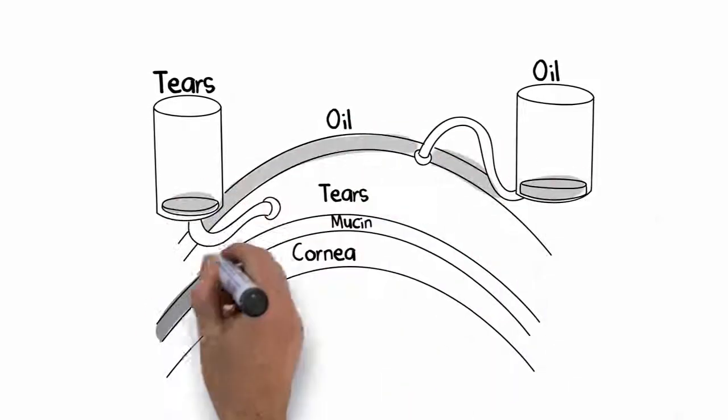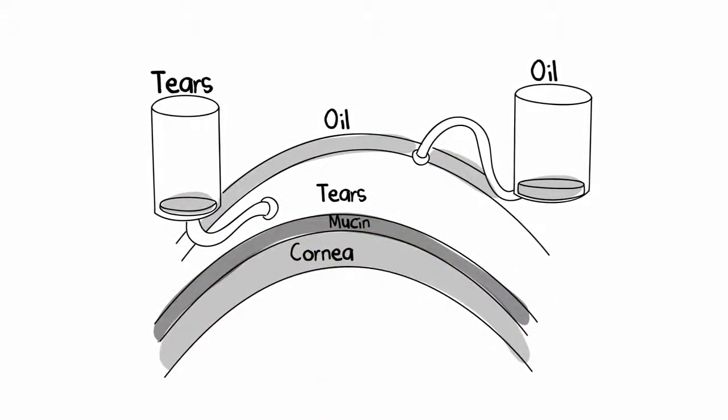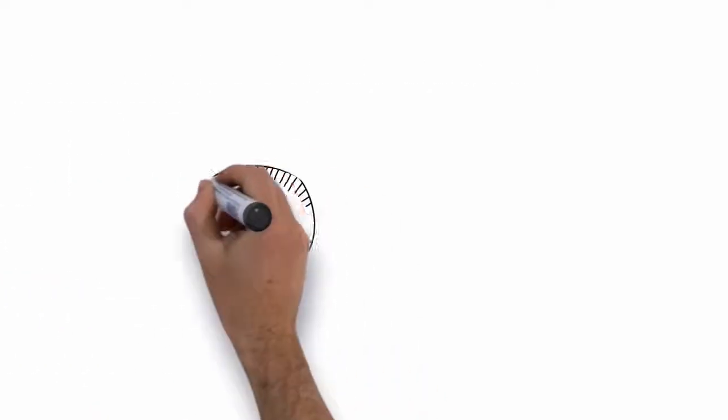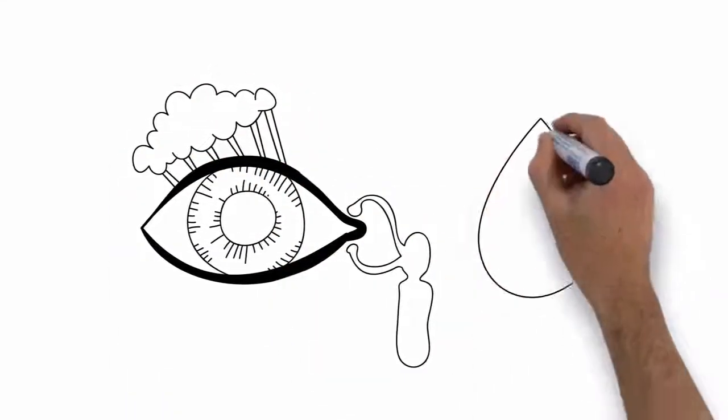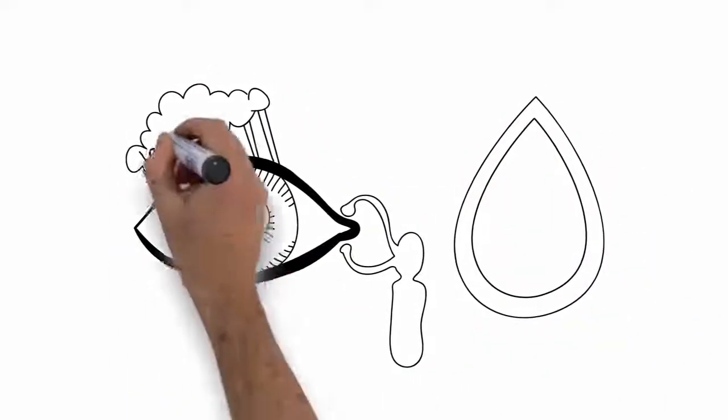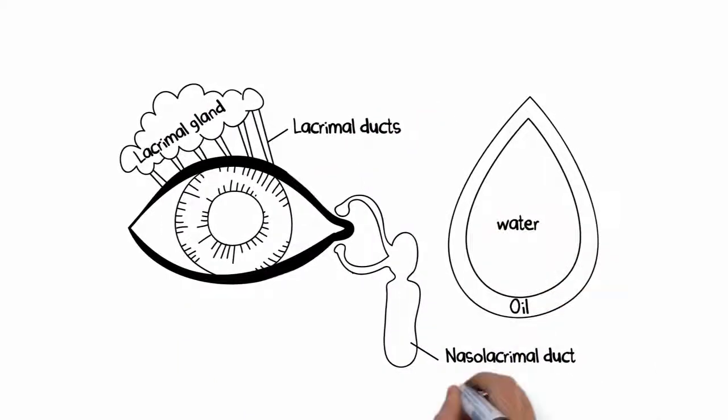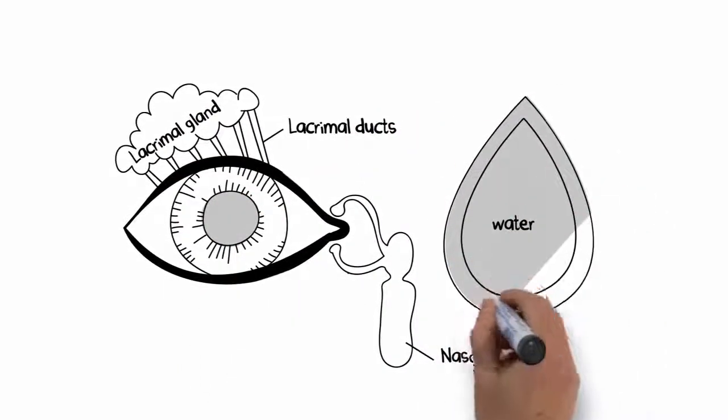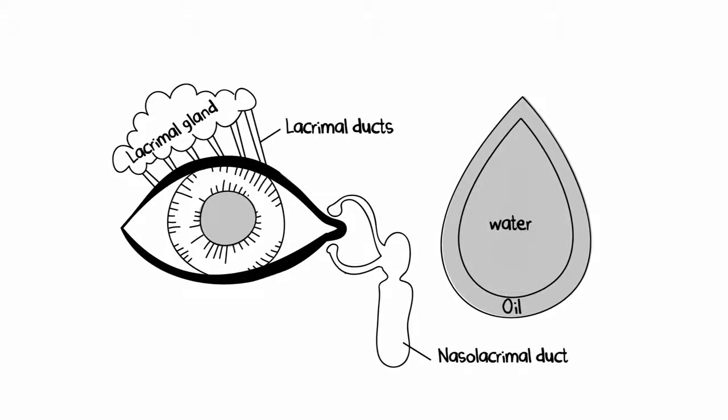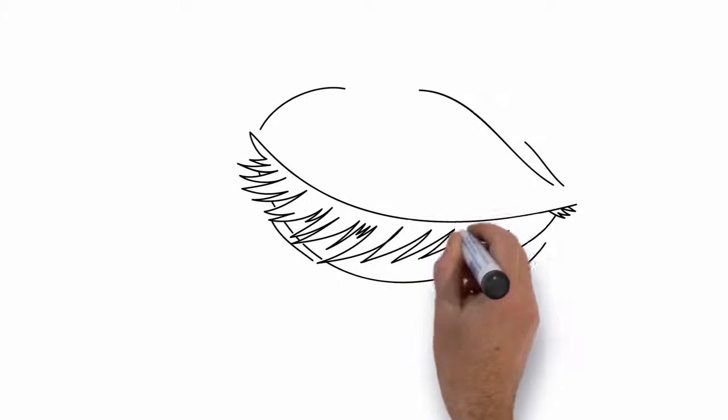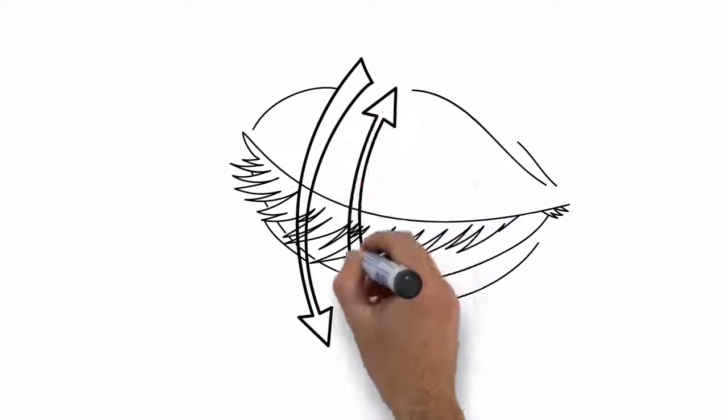Not blinking enough can also contribute to the problem. Our eyes are always making tears. Most of the time we don't notice. Tear glands on the eye produce fluid, and special glands in the eyelids secrete oil that keeps that fluid from drying out. You blink unconsciously to continually keep the eyes moist. As long as these three things happen, your eyes feel great.